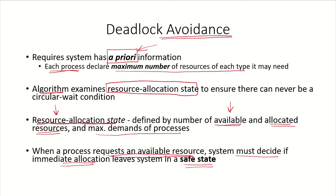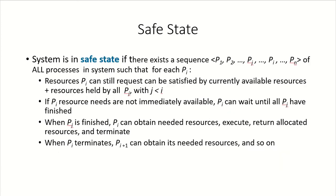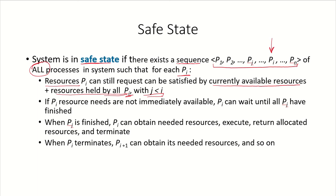Any time a process is requesting for a resource, the system will check whether the allocation of the resource will lead to a deadlock or not. The system is in a safe state if there exists a sequence P1 to PN of all the N processes in the system such that for each Pi, the resources that Pi can still request can be satisfied by the currently available resources plus the resources held by all Pj with j less than i. So Pi is already holding some resources but it might require new resources.